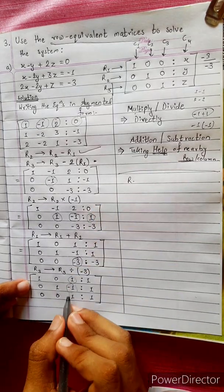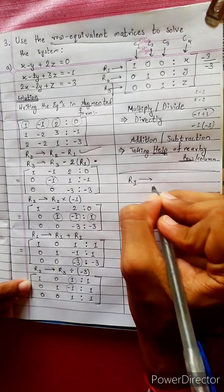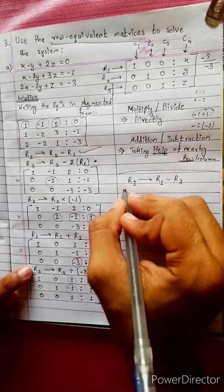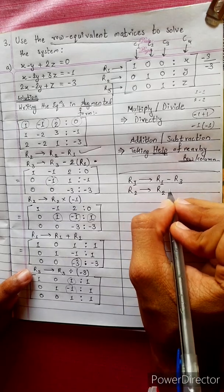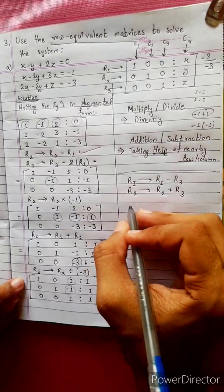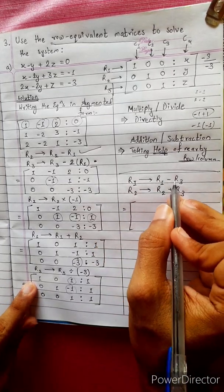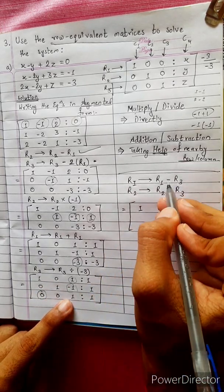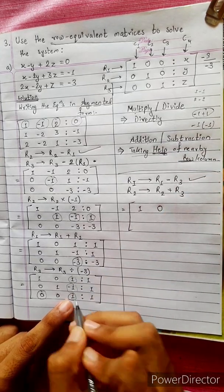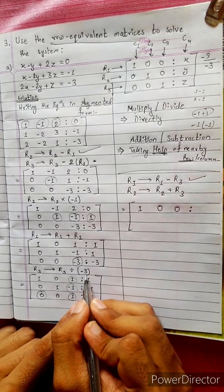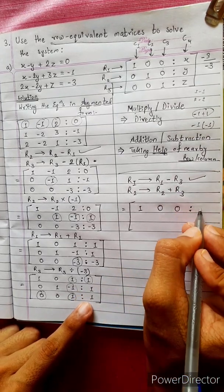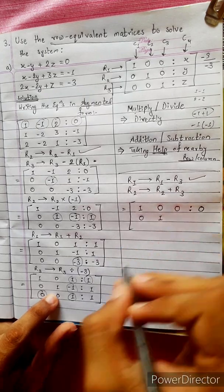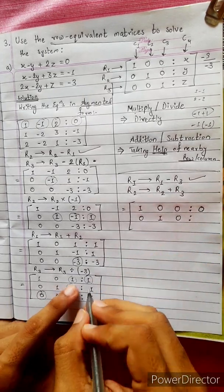Let me write R1, R2. We apply the row operations: R1 changes to R1 minus R3, and R2 changes to R2 plus R3. So R1 equals R1 minus R3: 1 minus 0 = 1, 0 minus 0 = 0, 1 minus 1 = 0, 2 minus 1 = 1. R2 equals R2 plus R3: 0 plus 0 = 0, 1 plus 0 = 1, -1 plus 1 = 0, 1 plus 1 = 2.